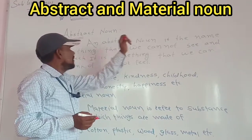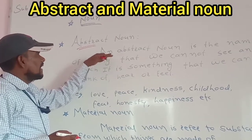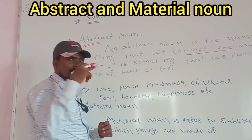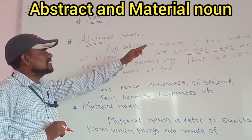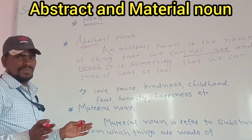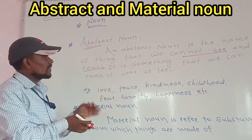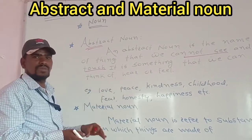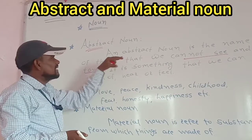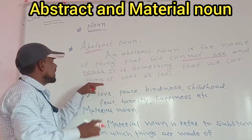Abstract noun is the name of a thing. An abstract noun is the name of a thing that we cannot see and we cannot touch. It is the name of something that we can't see and we can't touch.